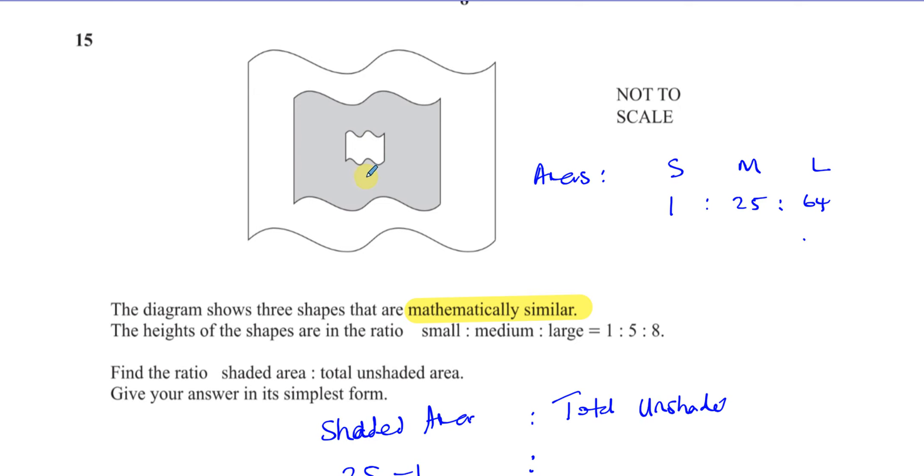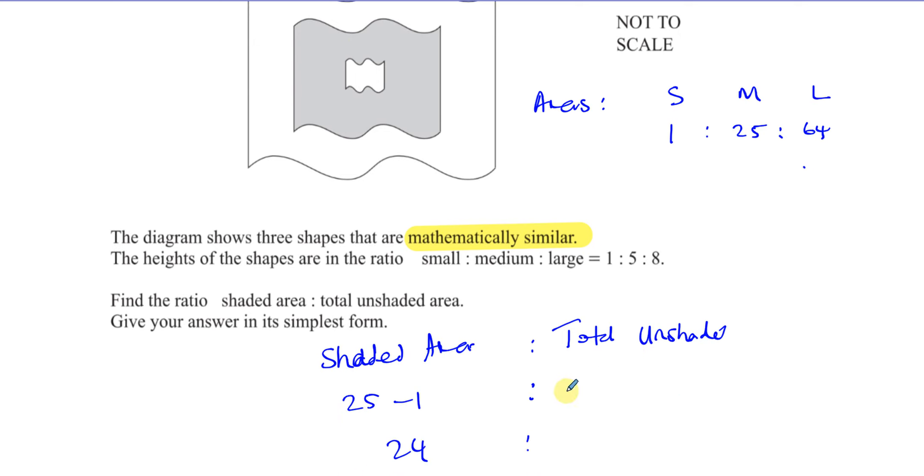Oh, the unshaded area, sorry. The unshaded area is the whole thing take away this part here, the part that's shaded. So it's going to be the whole thing take away what we just found here. It's going to be the whole thing, which is 64 minus 24, which is going to be 40.